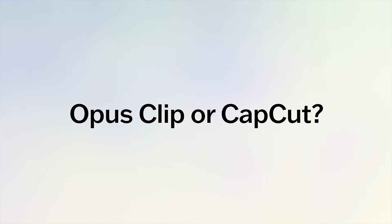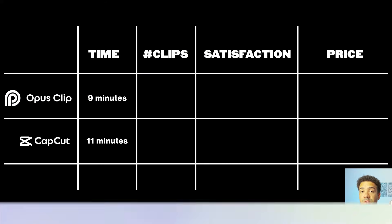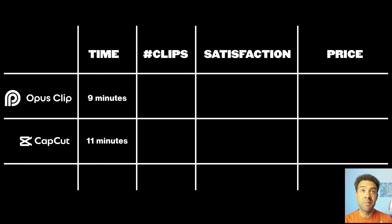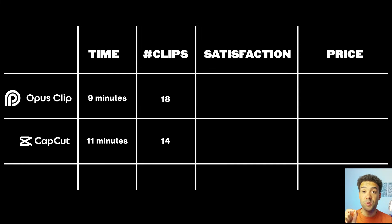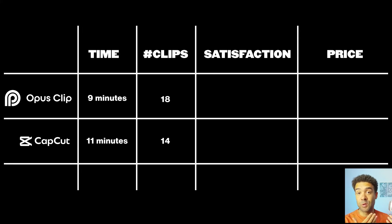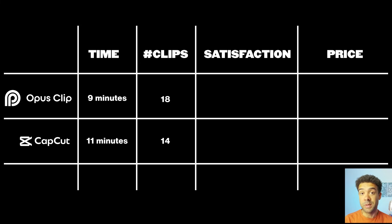Now you've seen how the process works with both CapCut and Opus Clip, you're ready to hear which is the fastest and best AI for creating YouTube shorts. Both platforms took around the same time to convert the long form video into shorts — Opus Clip took nine minutes and CapCut eleven. The number of usable clips was definitely different. I got 18 usable YouTube shorts from Opus Clip whereas CapCut only gave me 14. Every YouTube short is an opportunity to get more views, so even those four extra usable shorts from Opus Clip is really important.